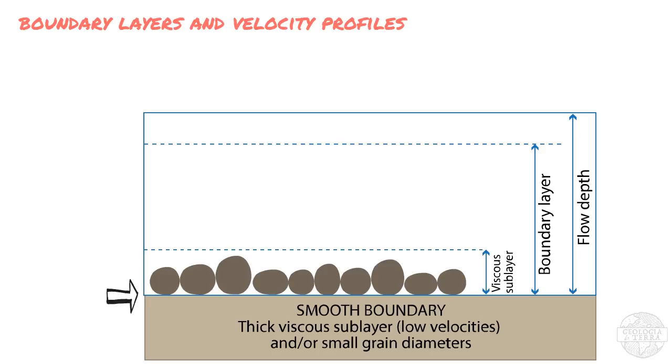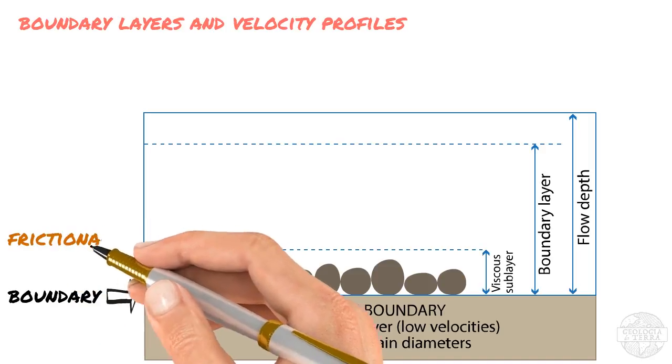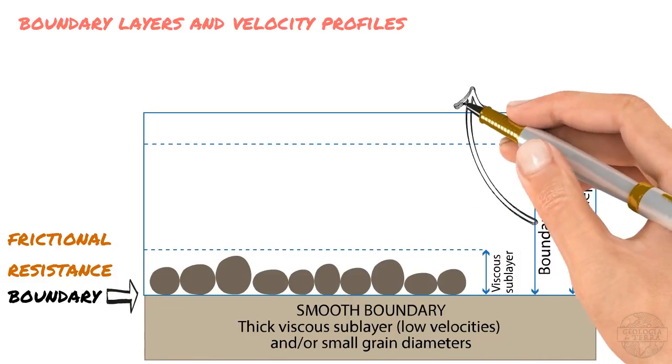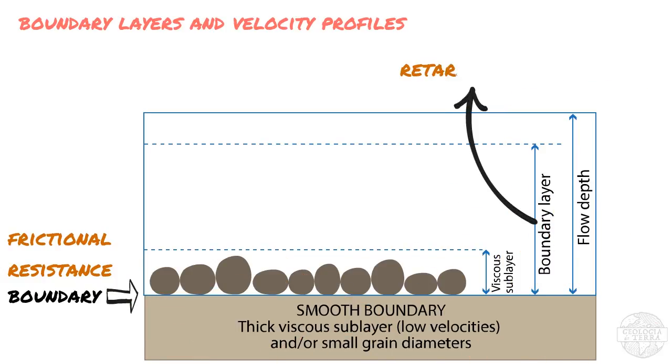When a fluid flows above a solid bed, called the boundary, the frictional resistance of this bed will retard fluid flow. This lag zone is called the boundary layer, where the velocity of the flow will vary from the velocity of the boundary, or bed, which is generally zero, to the velocity of the part of the stream which is not affected by friction with the bed, called the free stream.